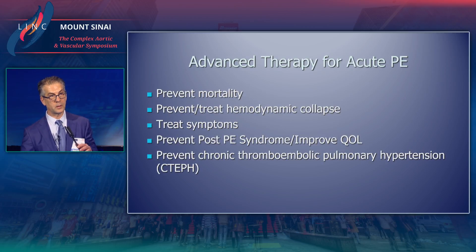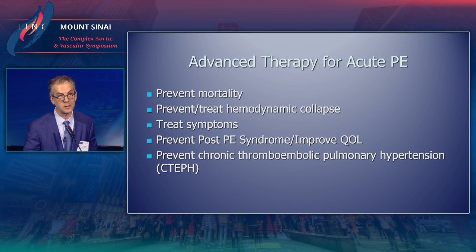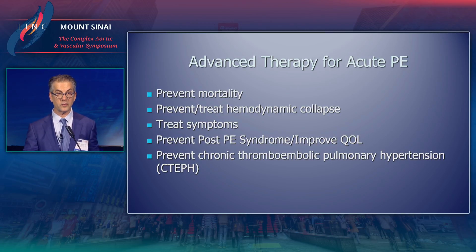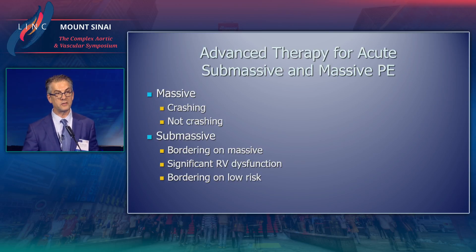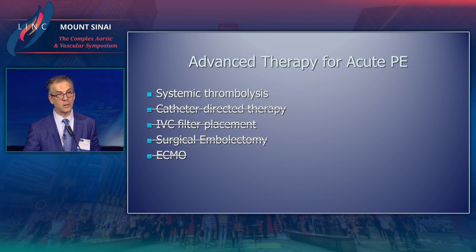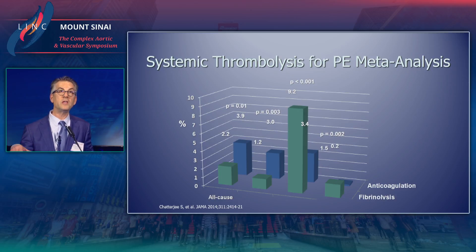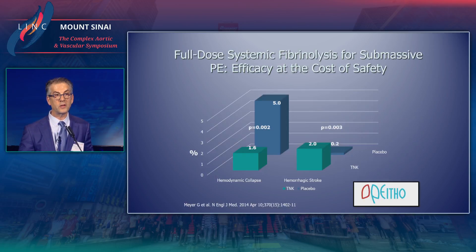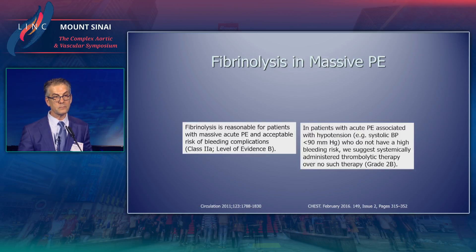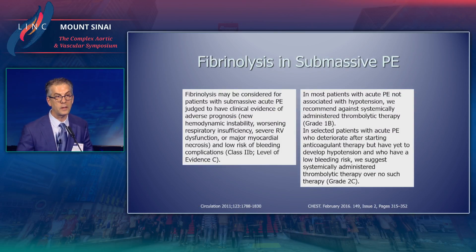Advanced therapy is pursued to prevent mortality, treat hemodynamic collapse, treat symptoms, potentially prevent post-PE syndrome, improve quality of life, and possibly prevent CTEPH. Regarding systemic thrombolysis, trials for both massive and submassive pulmonary embolism show better outcomes and less mortality with fibrinolysis, although at a risk for increased bleeding. Fibrinolysis is covered in the guidelines and used in specific patient populations.